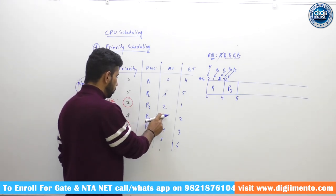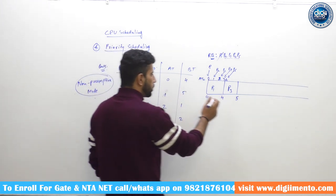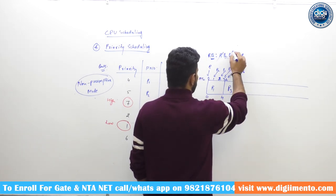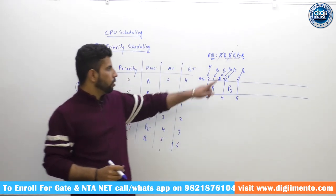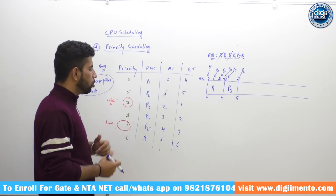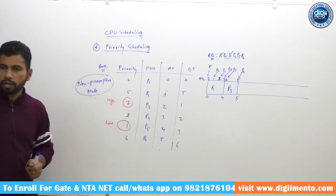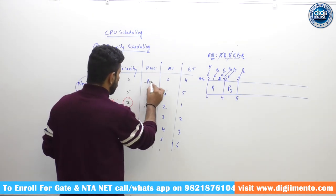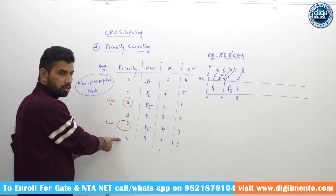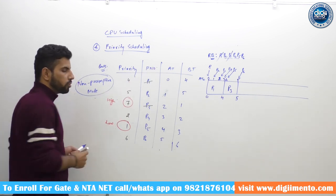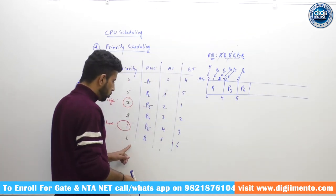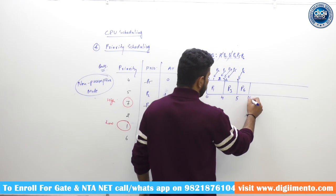During P3's execution, P6 also enters the ready queue at time 5. P3 is completed. Now 4 processes are in the ready queue: P2, P4, P5, and P6. Check which has the highest priority. P2 priority is 5 but P6 priority is 6, so P6 has the highest priority among all 4 processes. We go for P6.